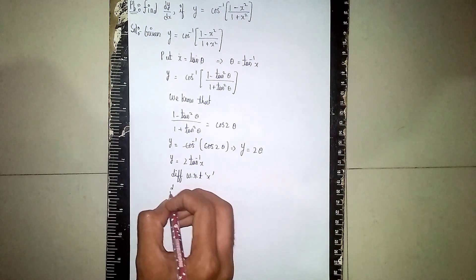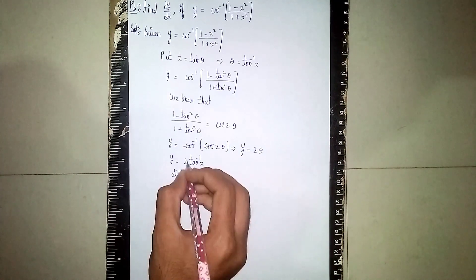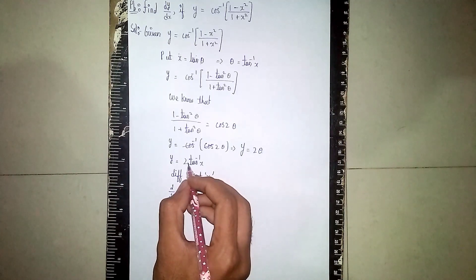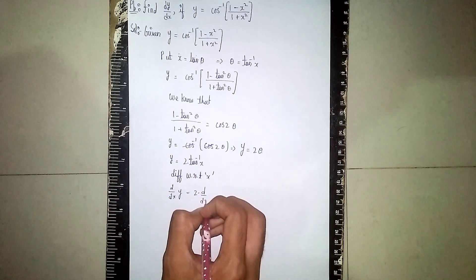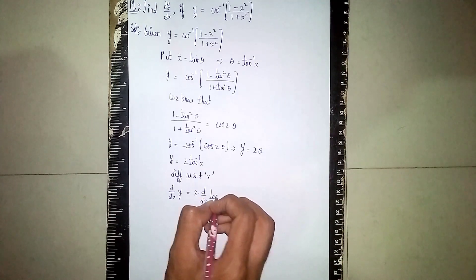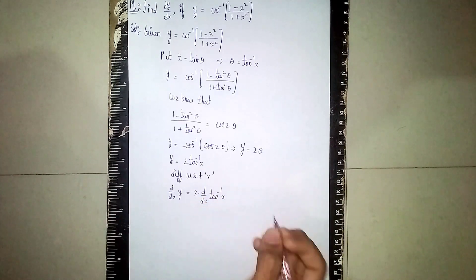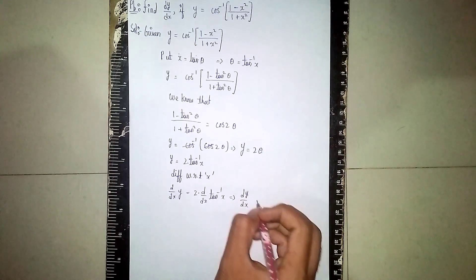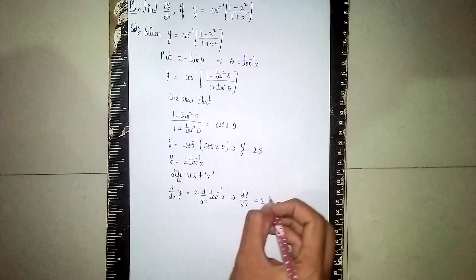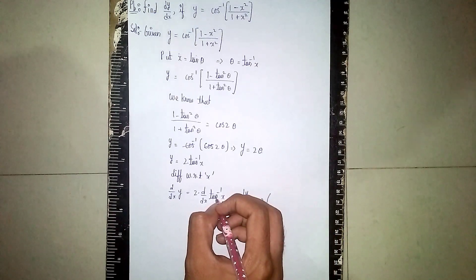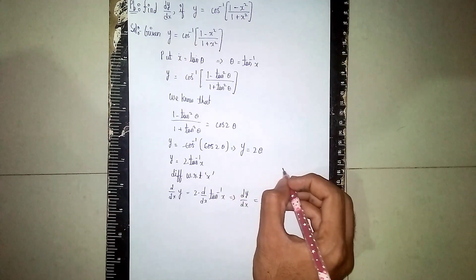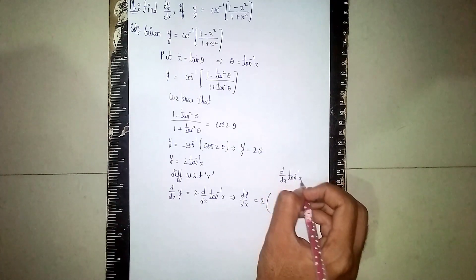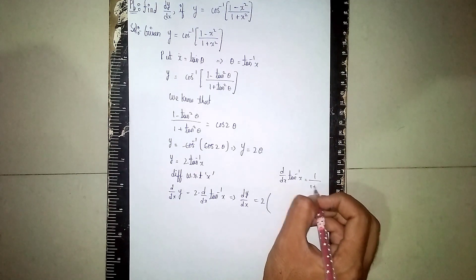Now differentiate with respect to x. So d/dx of y is equal to 2 times d/dx of tan inverse x, where the constant 2 comes outside. This becomes dy/dx is equal to 2 into d/dx of tan inverse x, which equals 1 by (1 plus x square).